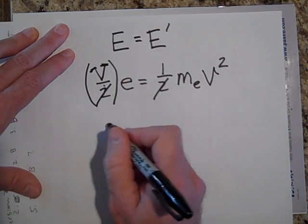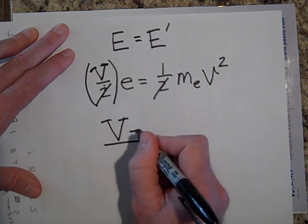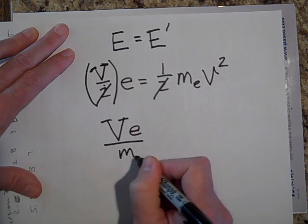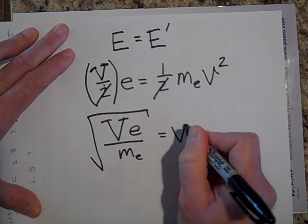So we can get rid of a 2. Bring the ME on the other side. And so it's V over, VE over M, mass of an electron, square root it. That's what the speed is of the electron.